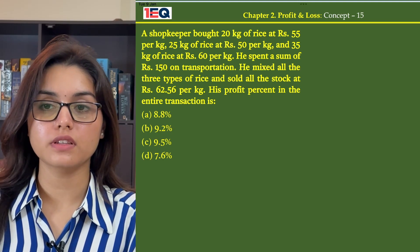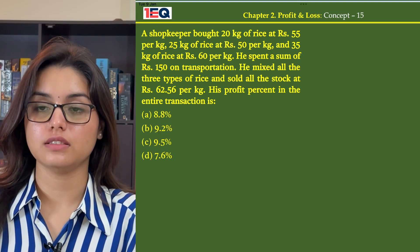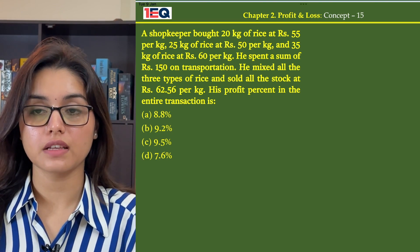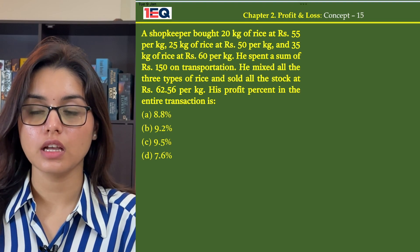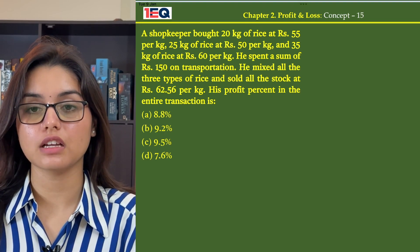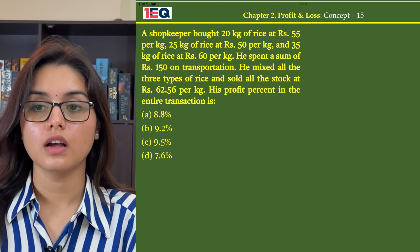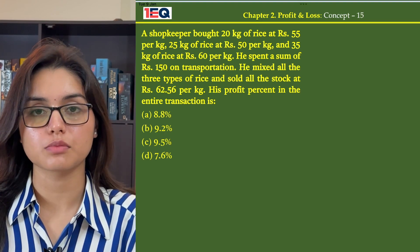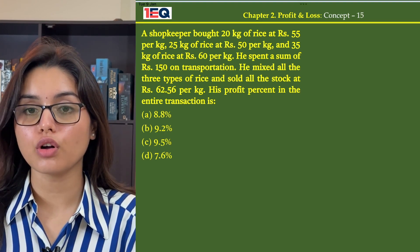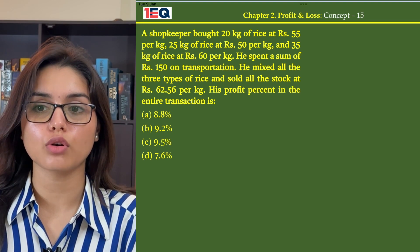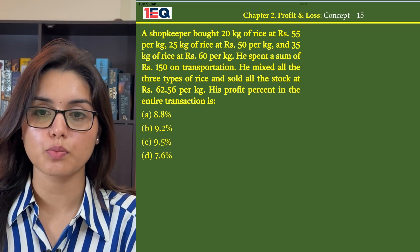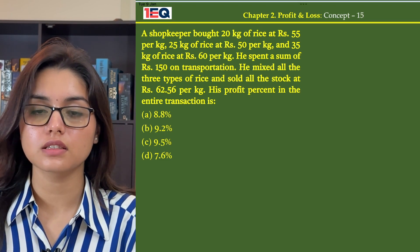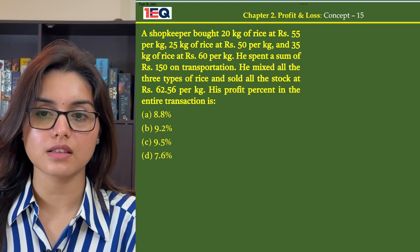A shopkeeper bought 20 kg of rice at Rs 55 per kg, 25 kg of rice at Rs 50 per kg, and 35 kg of rice at Rs 60 per kg. He spent a sum of Rs 150 on transportation. He mixed all 3 types of rice and sold all the stock at Rs 62.56 per kg. His profit percent in the entire transaction is?